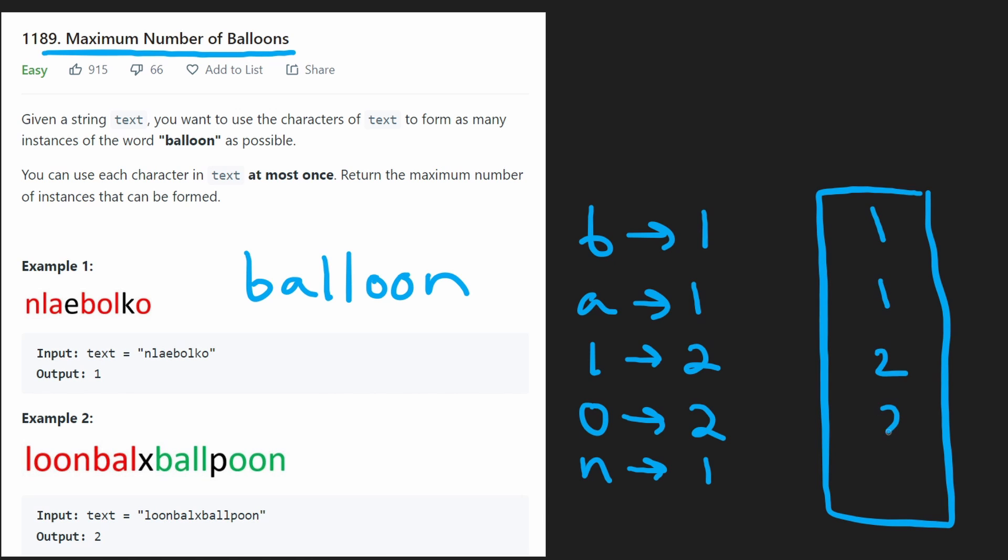Suppose we had one B, one A, two, two, and one. Well, in this case, you can see, obviously, we have just enough to create this word a single time.